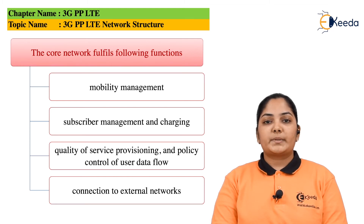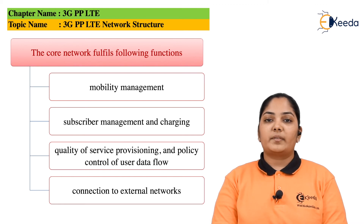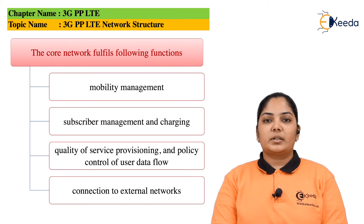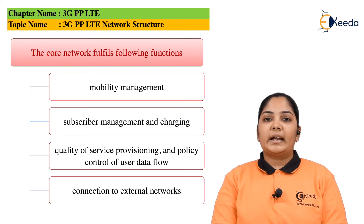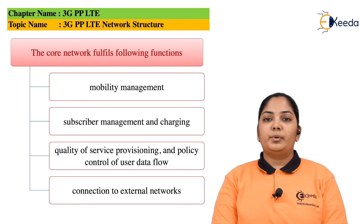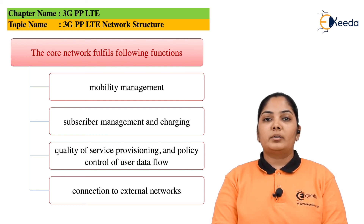Moving on to the Home Subscriber Server or HSS — it is a key element of LTE. It is a master user database stored on a single node. It allows the communication service provider to manage customers in real-time and in a cost-effective manner. HSS allows service providers to perform specialized functions such as barring of certain services, activation and deactivation of SIM cards, and creation of hierarchical segregation of subscribers based on their subscription. The role of the HSS is to communicate with the network and provide the subscriber profile and authentication information, including details of the device as well as the user's location and service information.